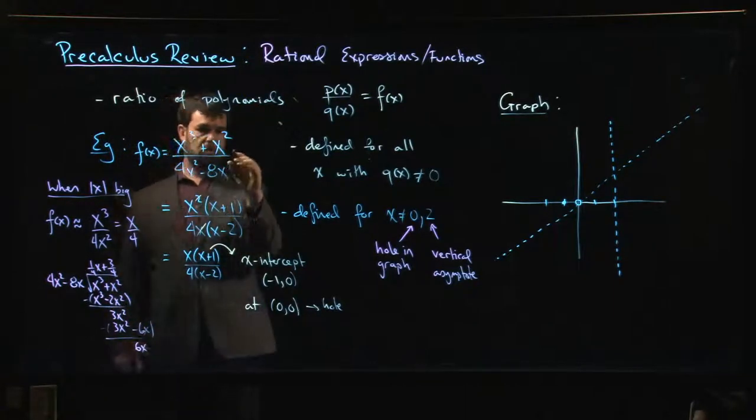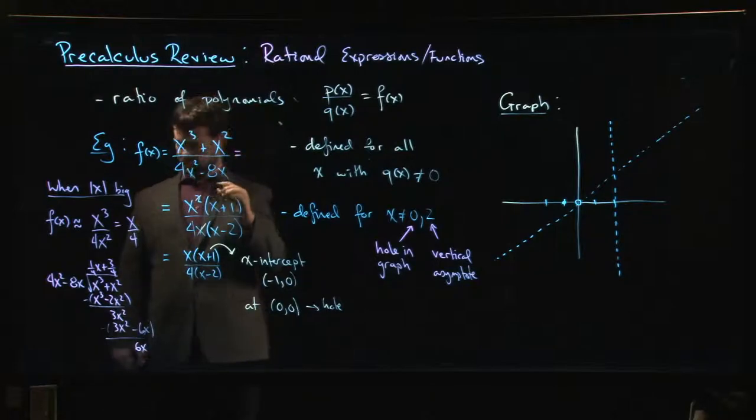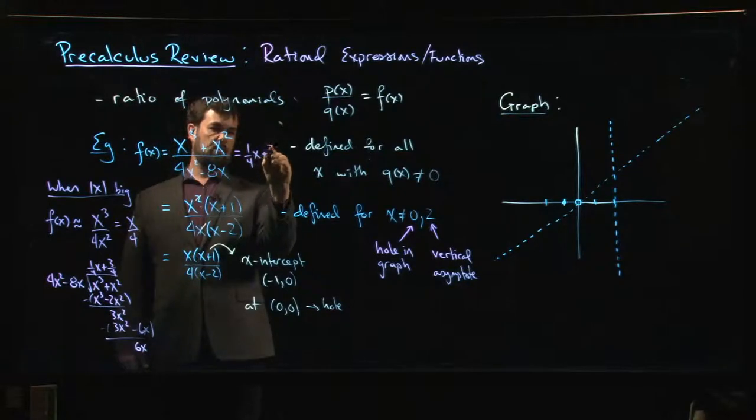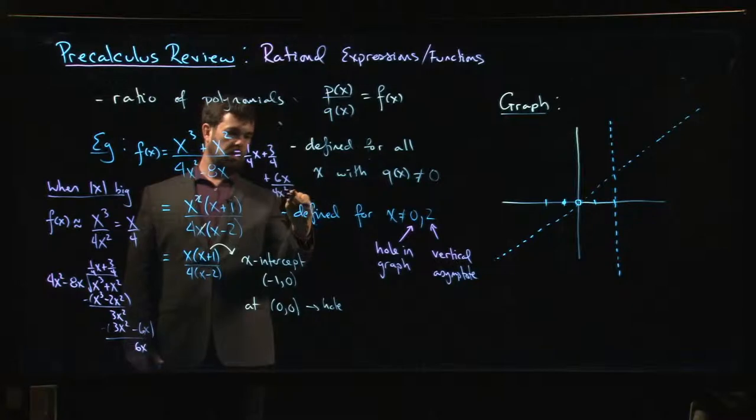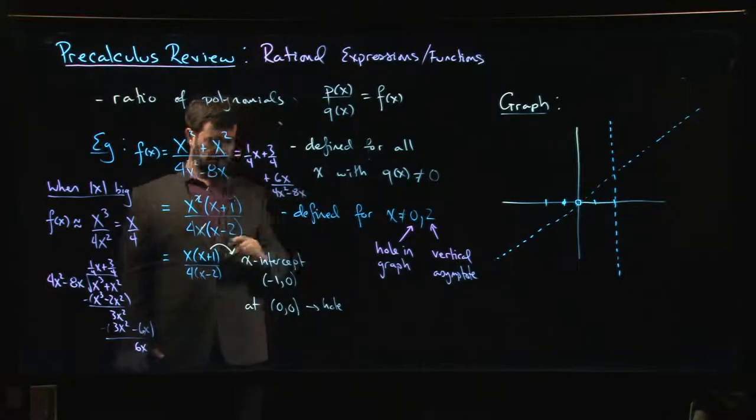So what that tells me is that I could write this expression one way I could have written this is I could have written it as 1 quarter x plus 3 quarters plus 6x over 4x squared minus 8x.